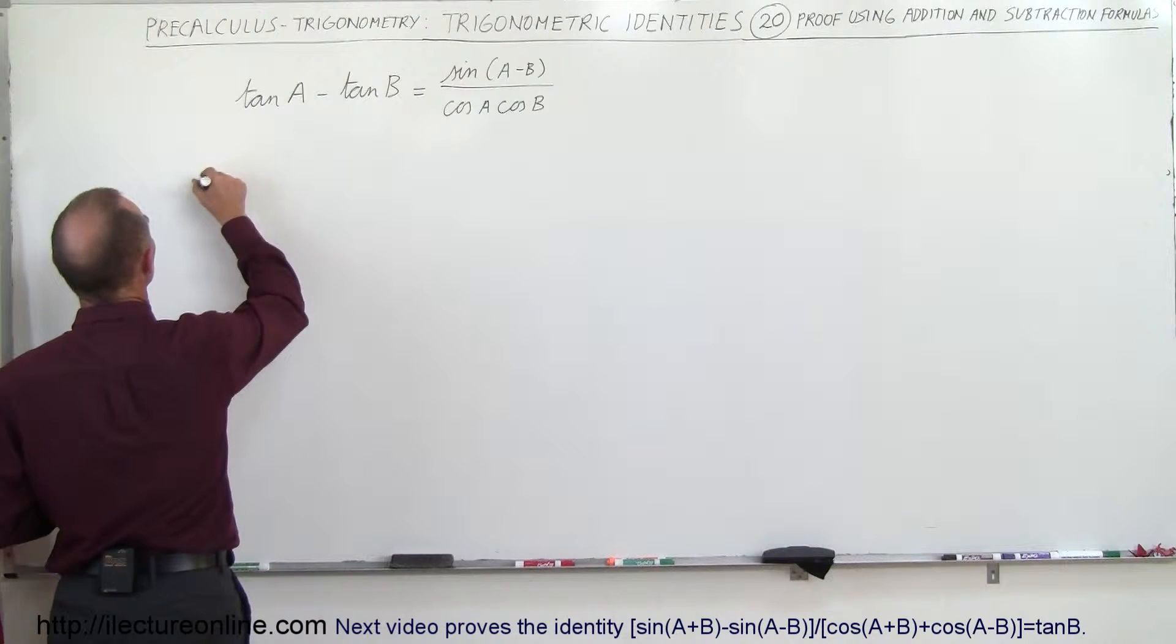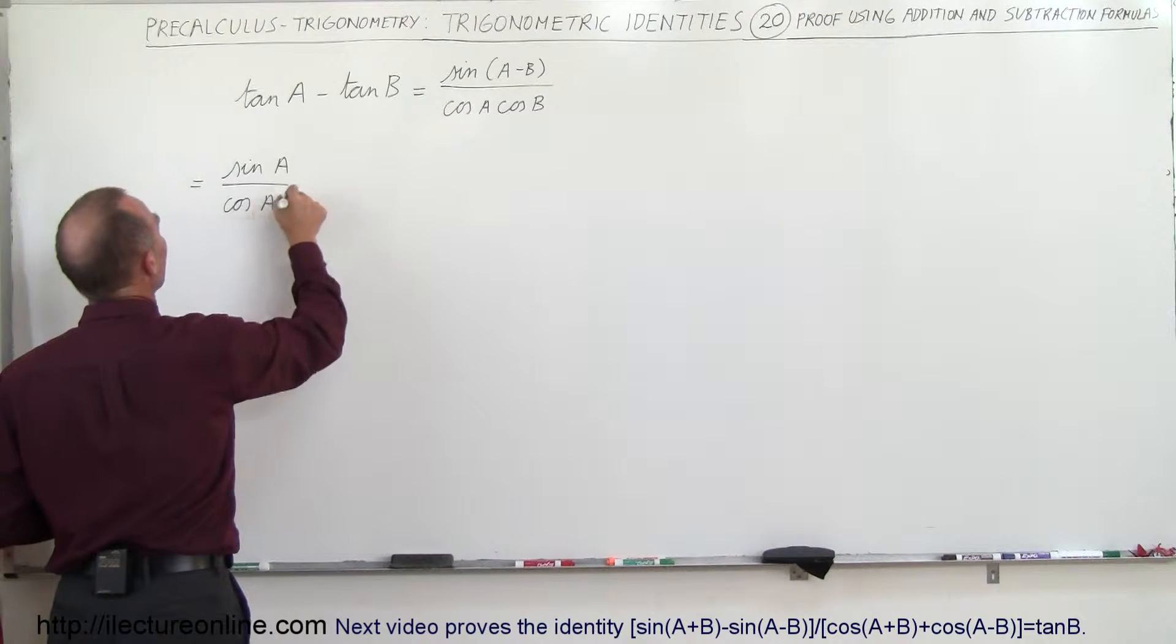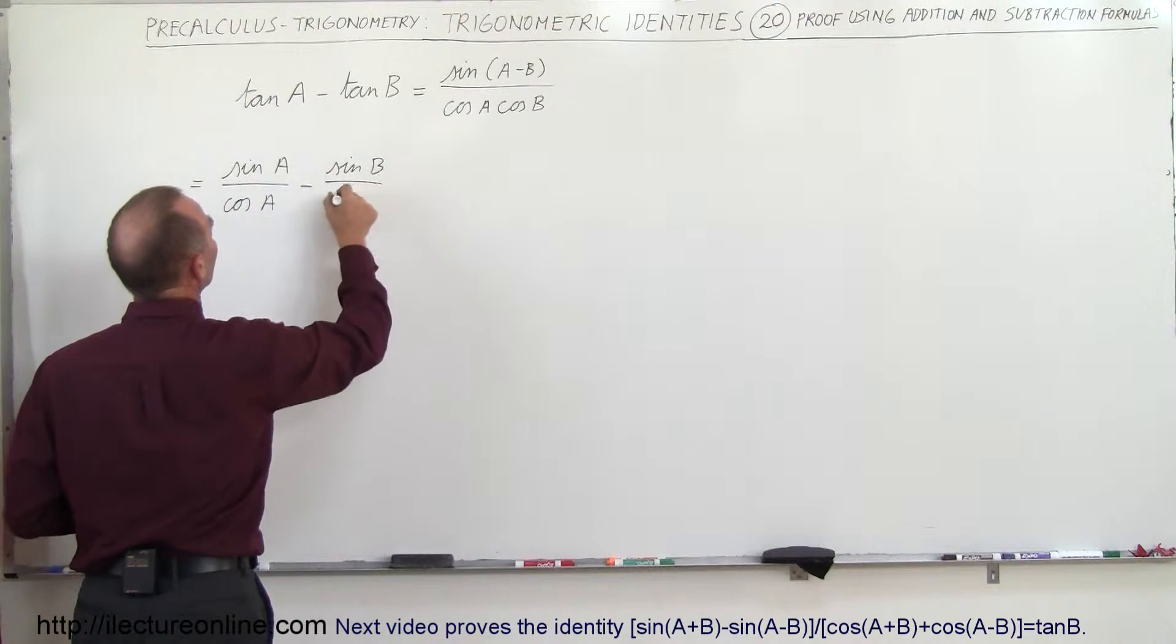So let's do that. This is equal to sine A divided by cosine A minus sine B divided by cosine B.